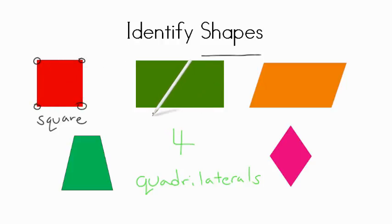Next here we have a rectangle. Now a rectangle looks a lot like a square, but its sides are not equal length. This side here...